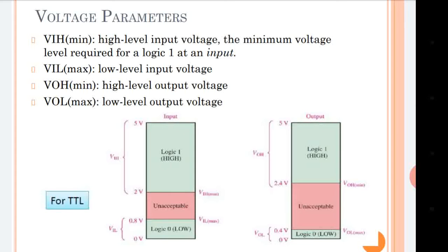In between there is an unacceptable range. Observing the input graph carefully: from 0 volt, the minimum value of the logic low band is 0 volt and its higher value is 0.8 volt. For the high band, that is logic 1, the value starts at 2 volt and the maximum value is 5 volt. These values are for the TTL logic family as an example, but they will change according to different logic families.